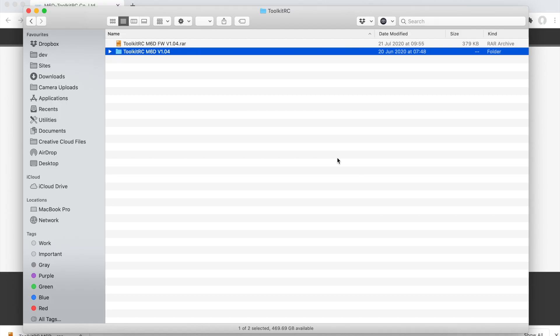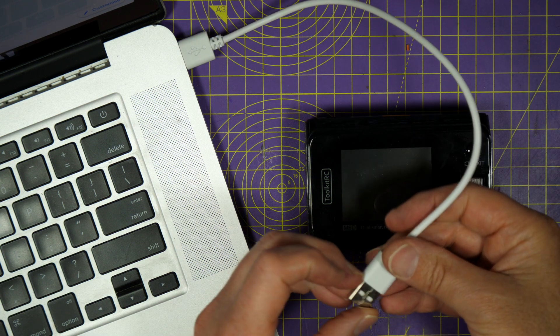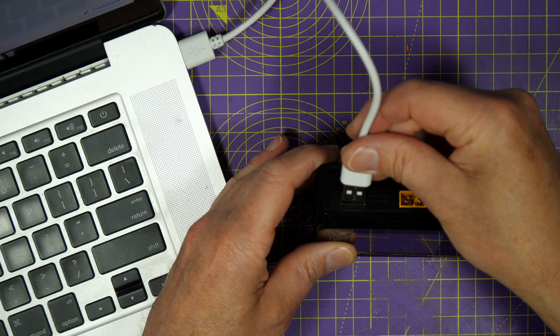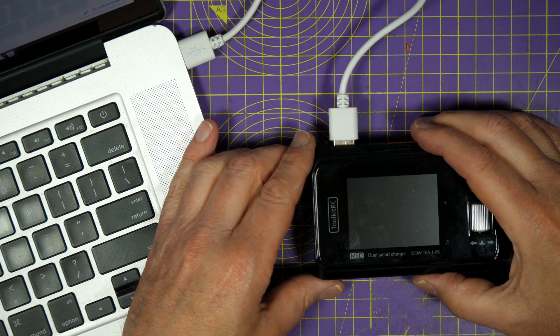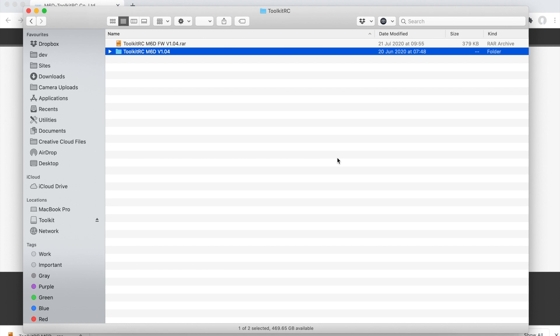Just unarchive the firmware somewhere on your PC and plug the M6D in with the USB cable Toolkit RC supplies. You don't need any power on the charger while you're doing this. It'll show up as an external drive called toolkit. On Windows it'll have a drive letter as well.